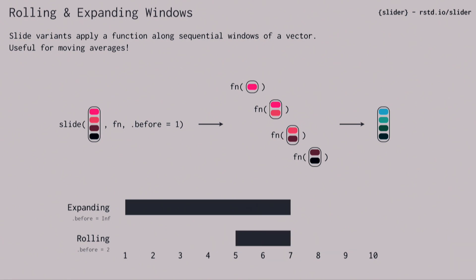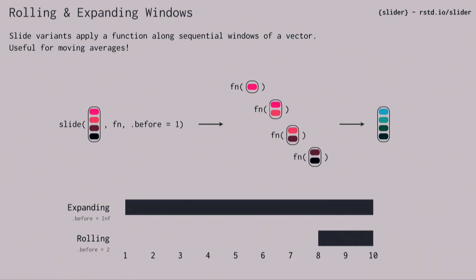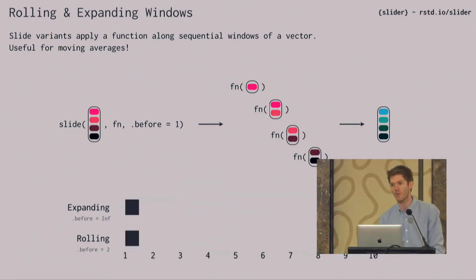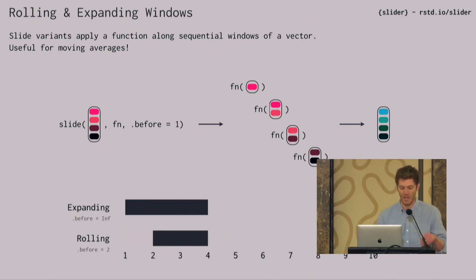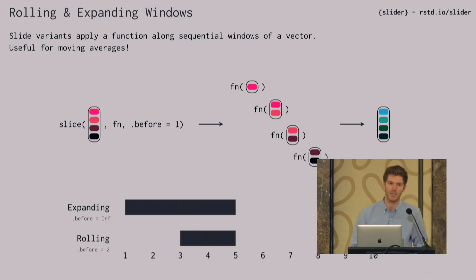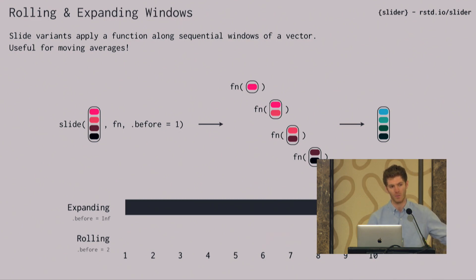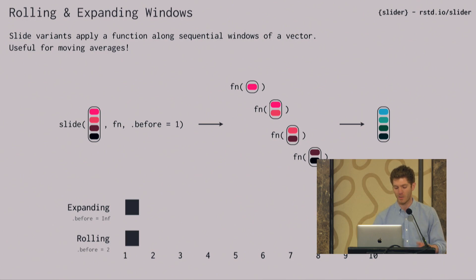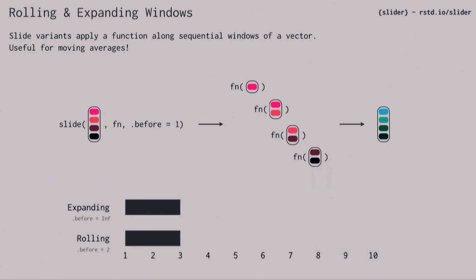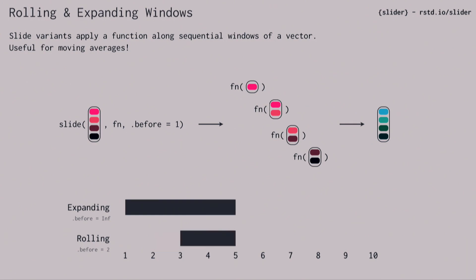With the function Slide, you take a vector as input, you take a function that you want to apply to different sliding windows of that vector, and then you can control the window size with these extra arguments. The only one I'm going to talk about today is the before argument. For each element, I take that current element of the vector and look one element before as well, and that makes up my sliding window. At the bottom here, there's another example with before equals two — you're seeing six back to four, seven back to five.